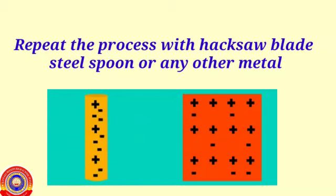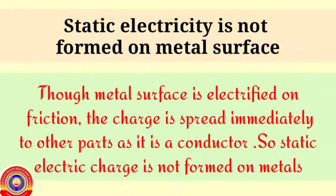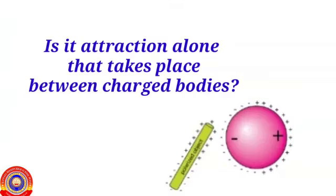This shows static electricity is not formed on a metal surface. Though the metal surface is electrified on friction, the charge spreads immediately to other parts as it is a conductor. So, static electric charge is not formed on metals.